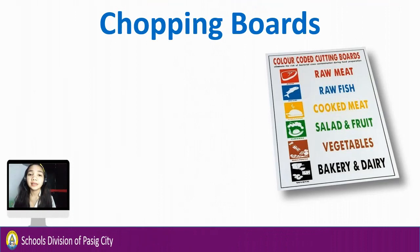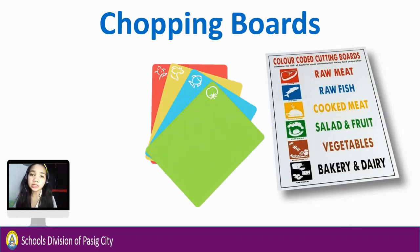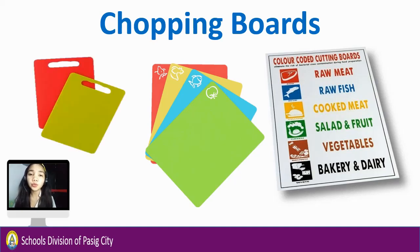It is recommended to follow color-coded chopping boards for each type of ingredient or product. But if we can't, four boards can do: one for vegetables and fruits, one for raw fish, one for cooked meat, and one for raw meat. If we are on a budget, two will be fine — one for meat and the other for fruits and vegetables.